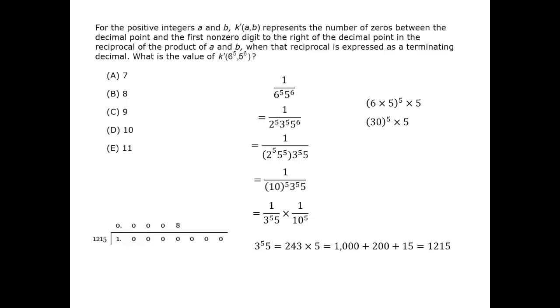Multiplying by 1 over 10 to the 5th will add 5 zeros, so the total number of zeros is 8. The correct answer is B.